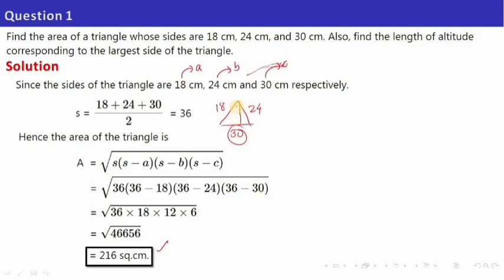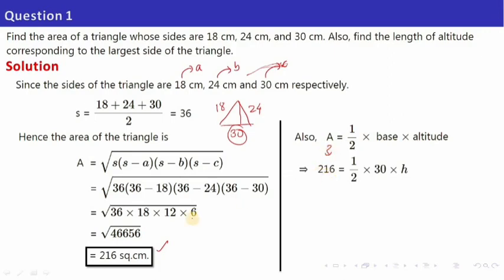I am going to use the other area formula — half into base into height — to calculate the height. The area is 216, which we just calculated. Base is 30. Keeping height as h, when you calculate h, you get 14.4. Bring 15 to the denominator and find 216 divided by 15, which gives 14.4 cm. So the altitude corresponding to the largest side of the triangle is 14.4 cm.